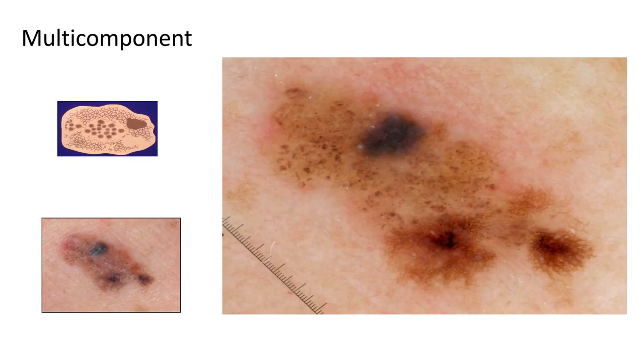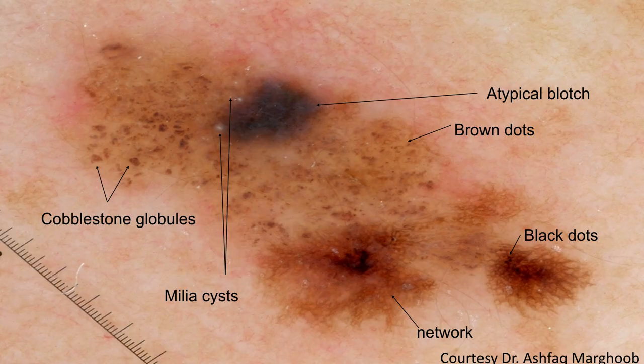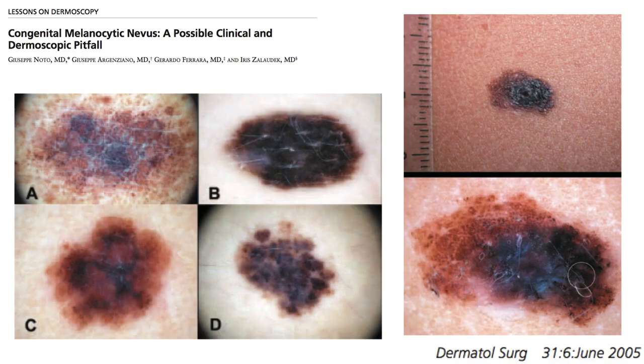The final pattern is the multi-component pattern. This is when we see many different dermoscopic structures, and clinically and dermoscopically it often raises the differential diagnosis for melanoma. We see cobblestone globules, black dots, brown dots, atypical blotch, milia-like cysts, and network — many different structures. Without knowing this was present at birth and had a long-standing history of stability, this would be a lesion coming off to rule out melanoma.